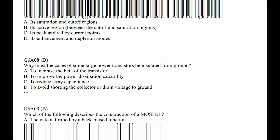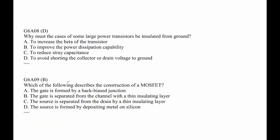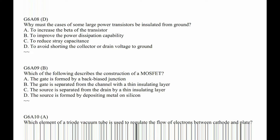G6A08. Why must the cases of some large power transistors be insulated from ground? Because it's a short — so the answer is D, to avoid shorting. G6A09. Which of the following describes the construction of a MOSFET? The gate is separated from the channel by a thin insulating layer. This one I didn't know, so again it's one we're going to have to memorize.